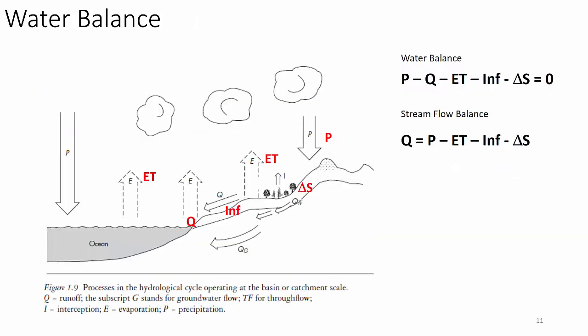As hydrologists we're concerned about Q — flow in rivers. To predict Q we have to know P, estimate ET, know infiltration, and understand delta S. In many cases the only thing we can control is delta S, so if we're going to control Q we have to change storage. Interflow — water returning to the ocean through subsurface flow — is complicated and location-specific, but it can be designed. I've actually designed several interflow systems for stream restoration.